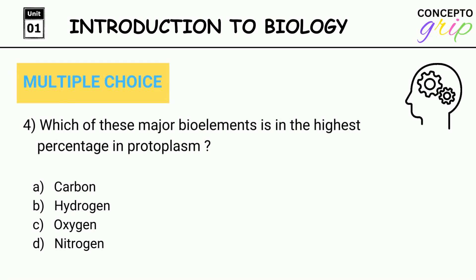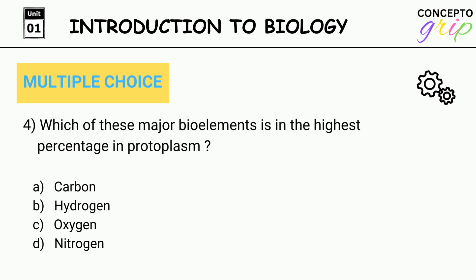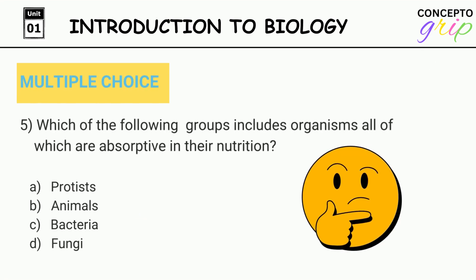Question 4. Which of these major bioelements is in the highest percentage in protoplasm? A. Carbon, B. Hydrogen, C. Oxygen, D. Nitrogen. Correct option is C. Oxygen.